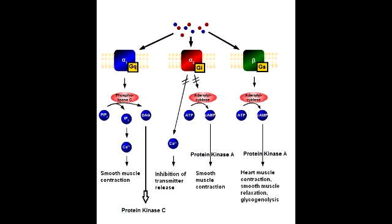The mnemonic to help you remember all the receptors that use the GQ class is HAV1MNM — HAV stands for H1, A1, and V1, and MNM stands for M1 and M3.